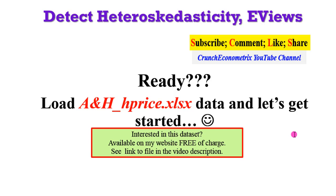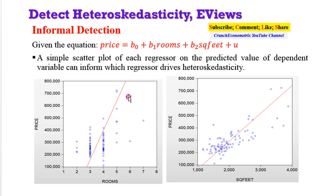This is what we intend to do. We intend to plot each regressor against the predicted value of the dependent variable, to know which of them drives heteroskedasticity in the model. We are using three variables in this model: Price, Rooms, and Square Feet. Price is the dependent variable, while Rooms and Square Feet are the independent variables.